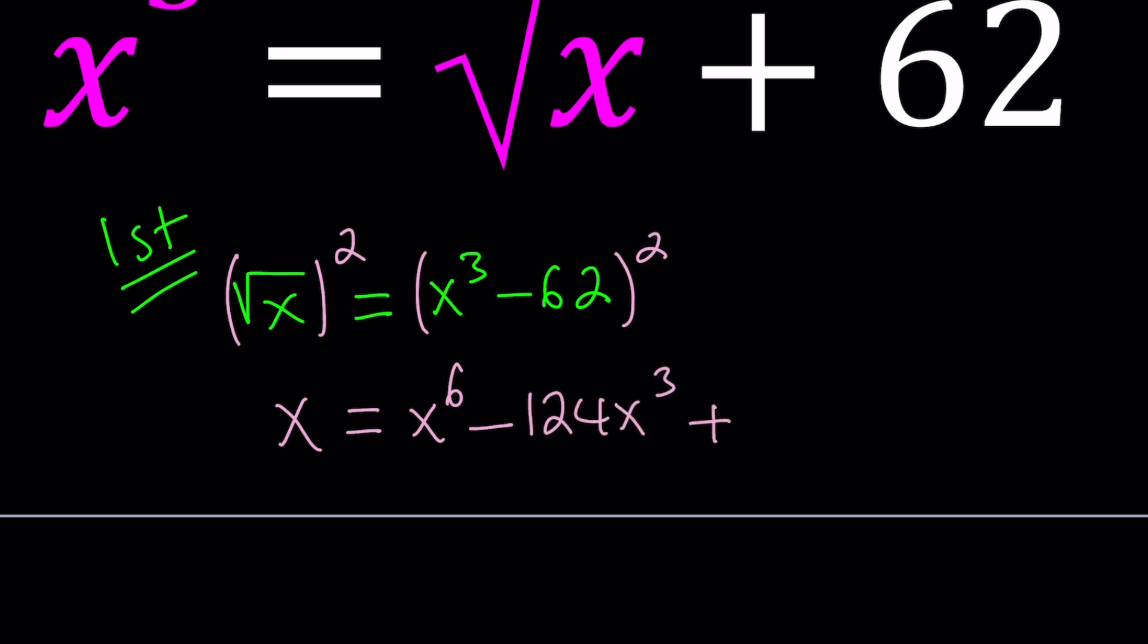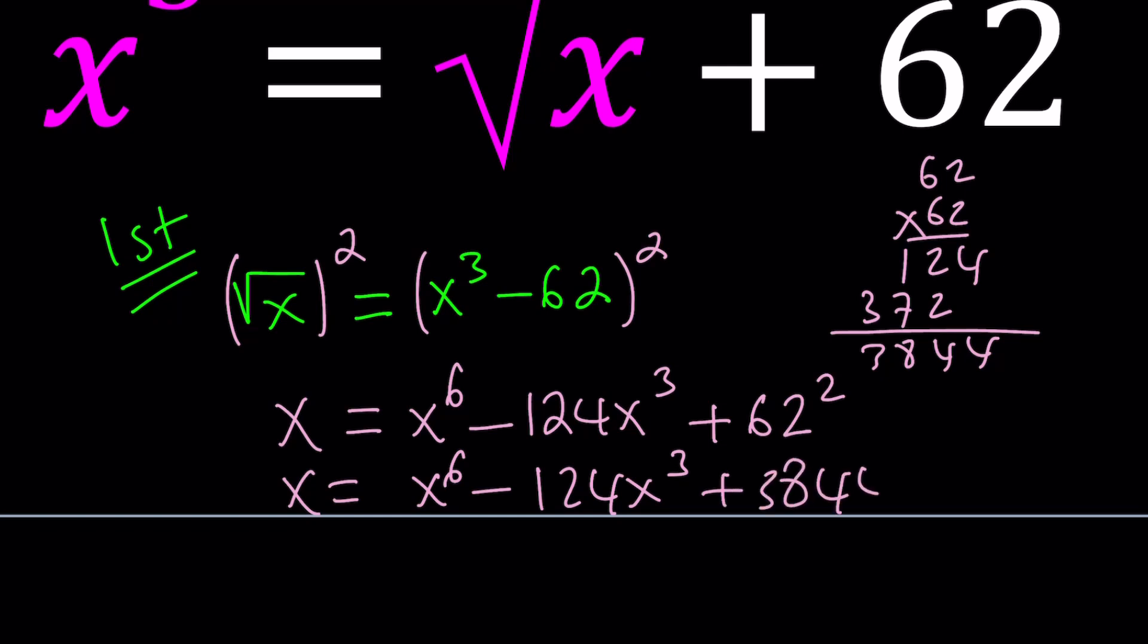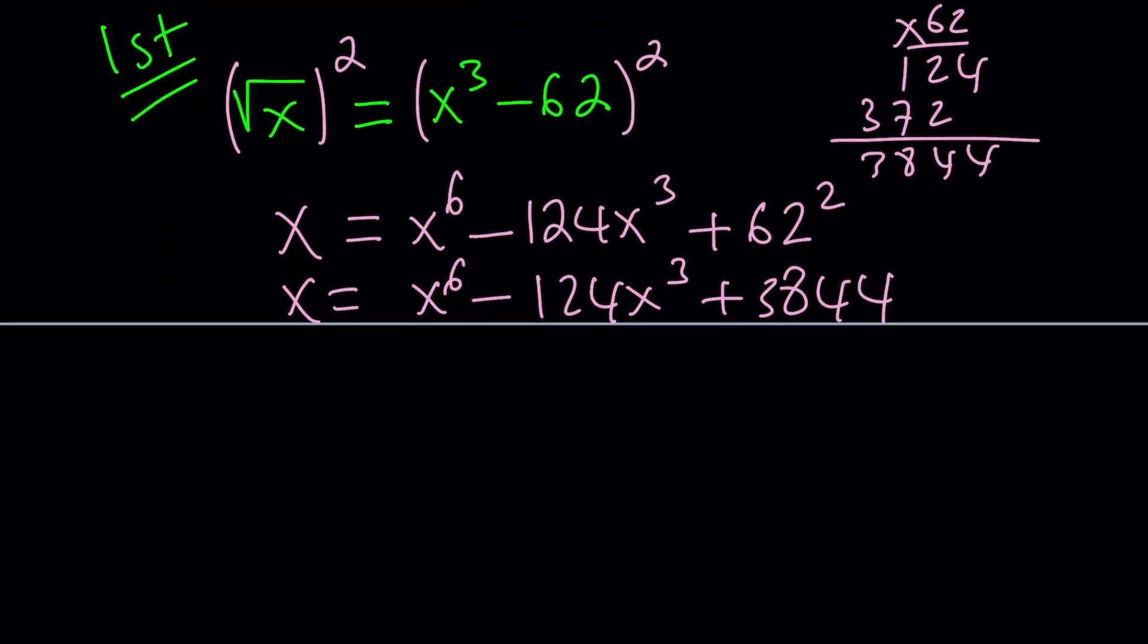62 squared. Now you might be asking what is 62 squared? I don't know, so I'm going to go ahead and multiply 62 by itself to find out what it is. I think it's going to be 372 and then we're going to get 4483. So that's supposed to be 3844 if I didn't make any mistakes. Hopefully I didn't. And then what we're going to do now is put it all together.